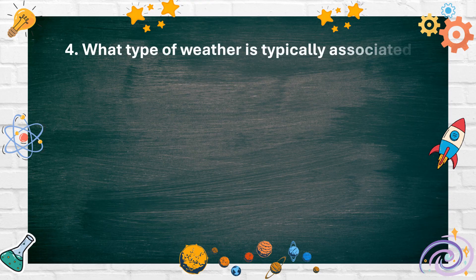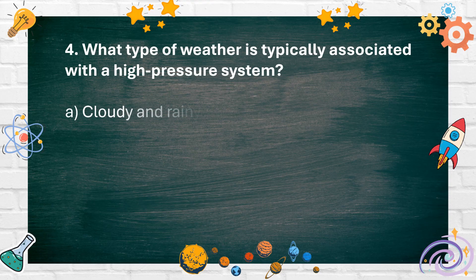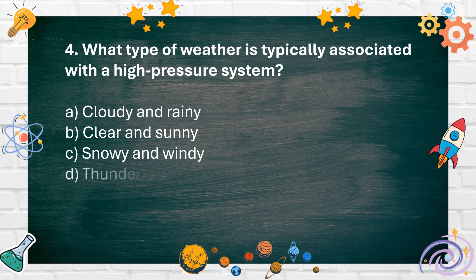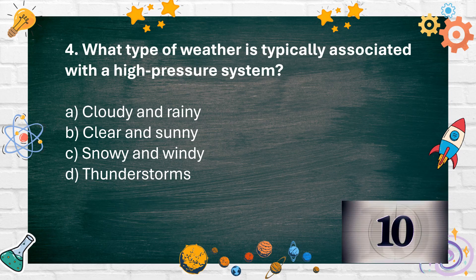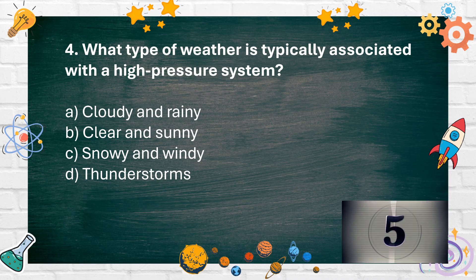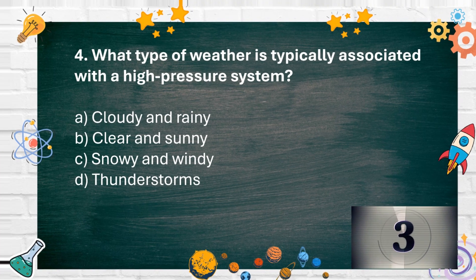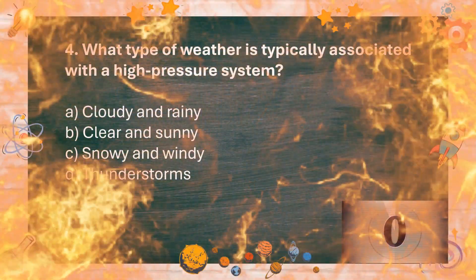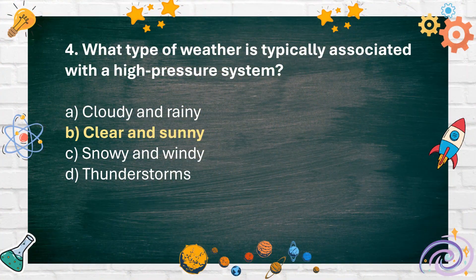Number 4. What type of weather is typically associated with a high-pressure system? A. Cloudy and rainy, B. Clear and sunny, C. Snowy and windy, D. Thunderstorms. The answer is B. Clear and sunny.